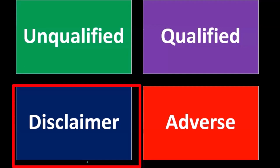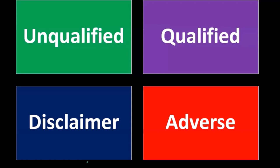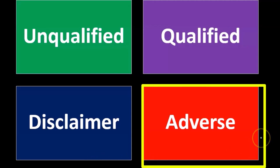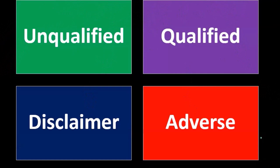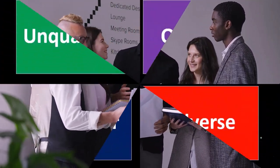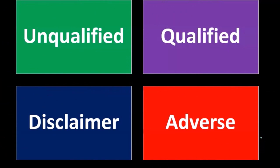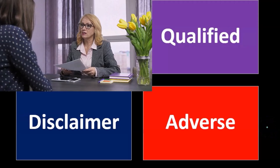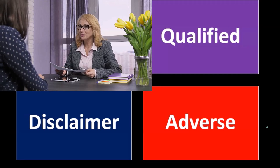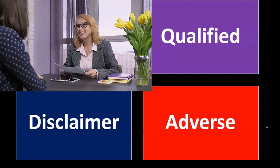A disclaimer means we were engaged to give an opinion, but there's some problem — possibly a scope limitation — so we can't complete the engagement and issue a disclaimer where no opinion is given. An adverse opinion basically says the financial statements are not in accordance with generally accepted accounting principles — that's a bad opinion. The audit gives an opinion as to whether the financial statements are in accordance with GAAP, and if they're not, we have an adverse opinion saying we don't believe with all material respects that the financial statements conform. If something is heading toward an adverse opinion, the engagement may be terminated before that point.